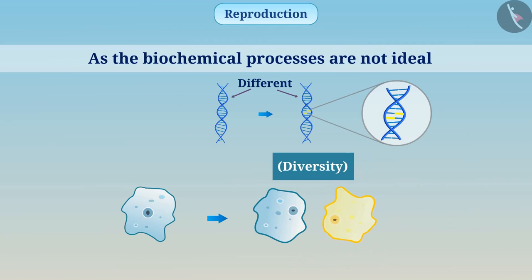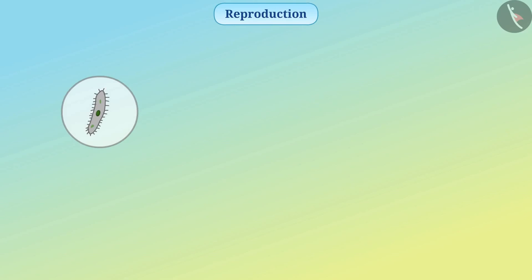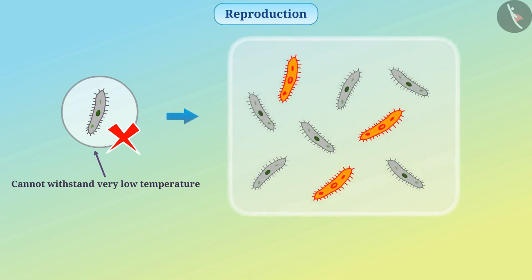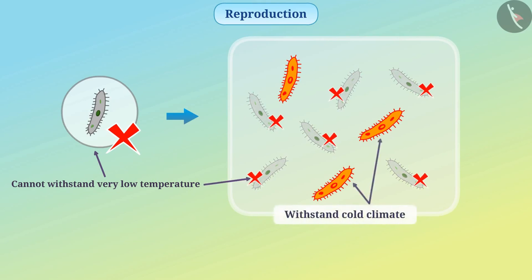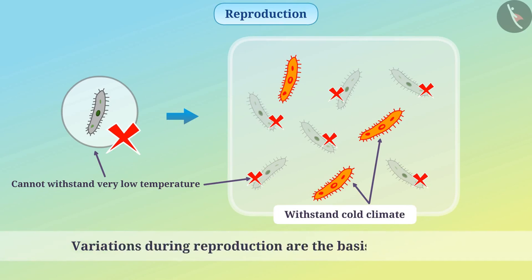Let's understand this with an example. Suppose there is a bacterium which cannot withstand very low temperature. During reproduction, it produces some bacteria which can tolerate very low temperature. If the climate becomes colder, many bacteria will vanish. However, those which can withstand cold climate help the species to survive. This is how variations are helpful for the survival of species, and therefore variations during reproduction are the basis of evolution. We will discuss this in another video.